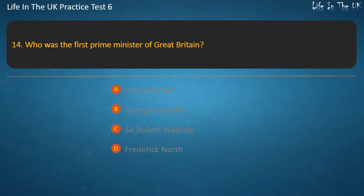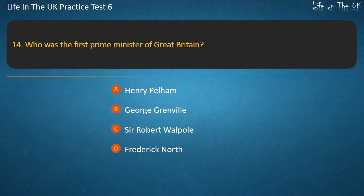Question 14. Who was the first Prime Minister of Great Britain? Options: Henry Pelham, George Grenville, Sir Robert Walpole, Frederick North. Answer: Sir Robert Walpole.